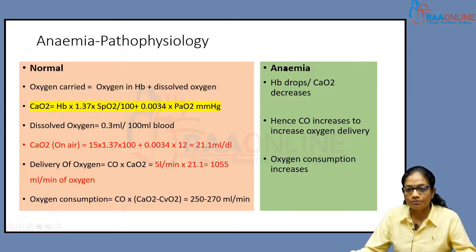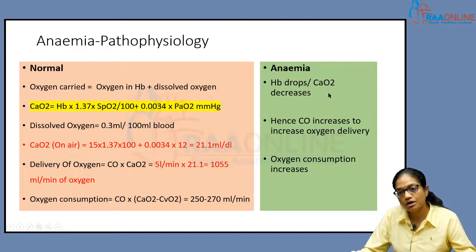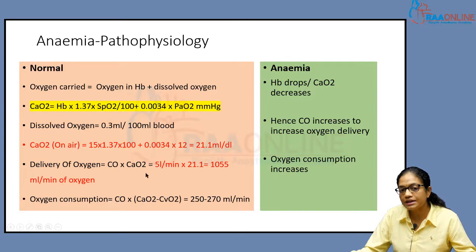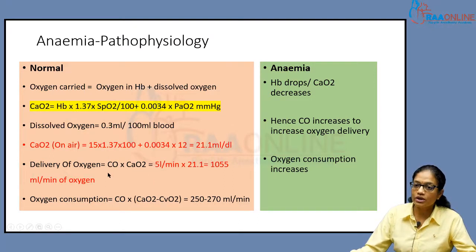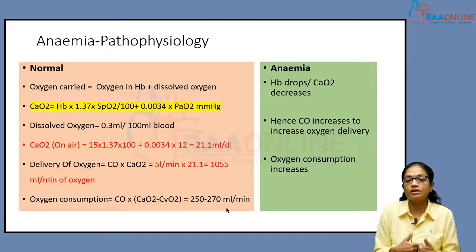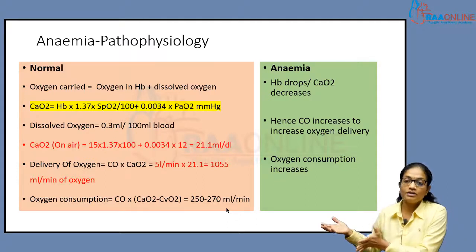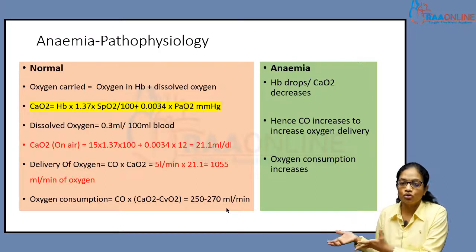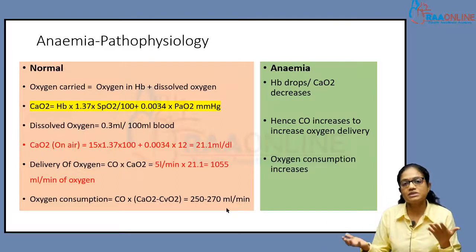What happens in anemia? Every part of this equation may be affected. As the hemoglobin drops, the arterial oxygen content drops. The cardiac output strives to increase because this content is dropping — it's working hard to increase delivery. And the need is actually more. You are delivering less, trying to compensate, but on the other hand, consumption is actually more by both the baby and the mother. This is where the mismatch actually happens in anemia.